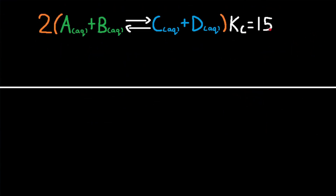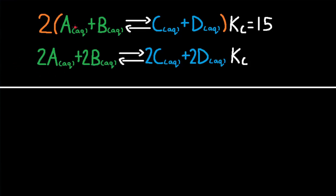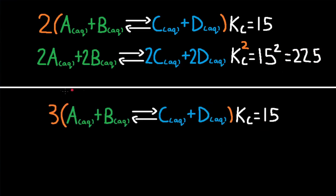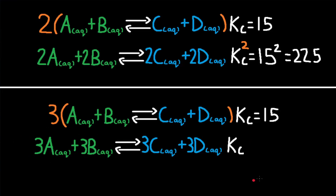If we multiply this reaction by 2, all coefficients become 2. The new Kc value is the old Kc value raised to the power of what the reaction is multiplied by. Since we're multiplying by 2, Kc equals 15 to the power of 2, which is 225. If we multiply the reaction by 3, all coefficients become 3, and Kc equals 15 to the power of 3, which gives us 3,375.